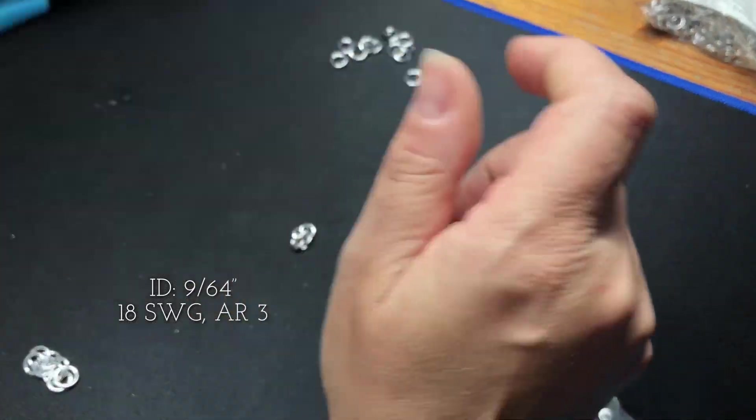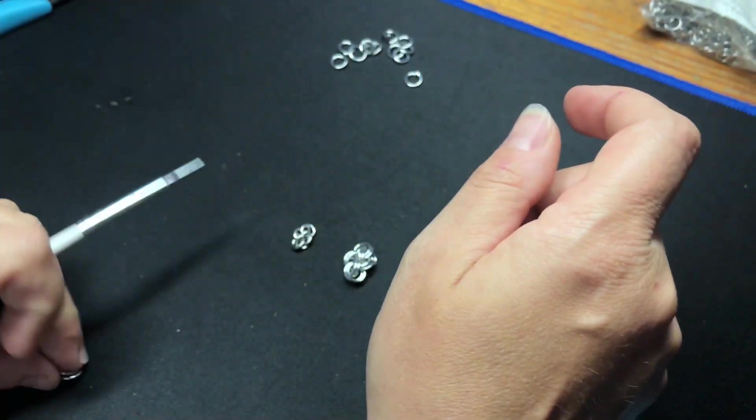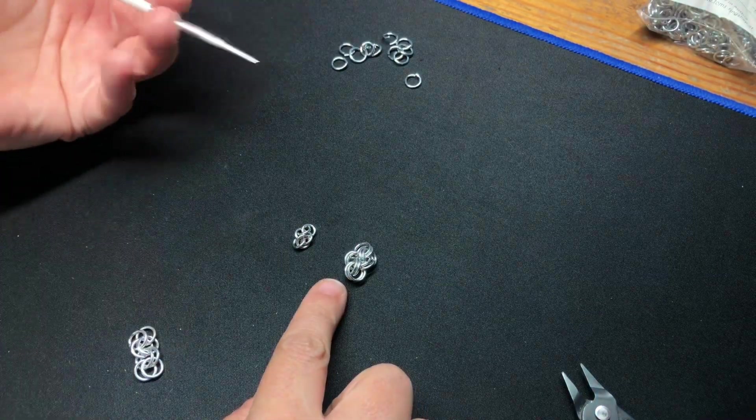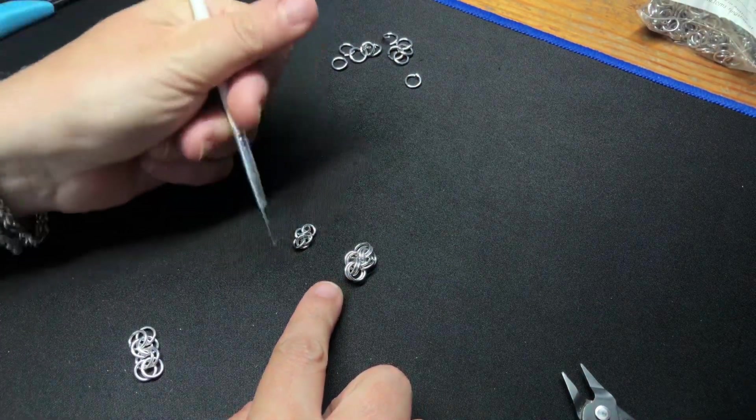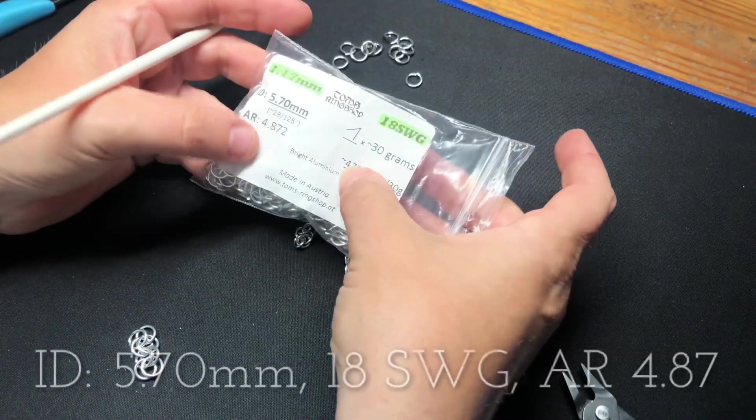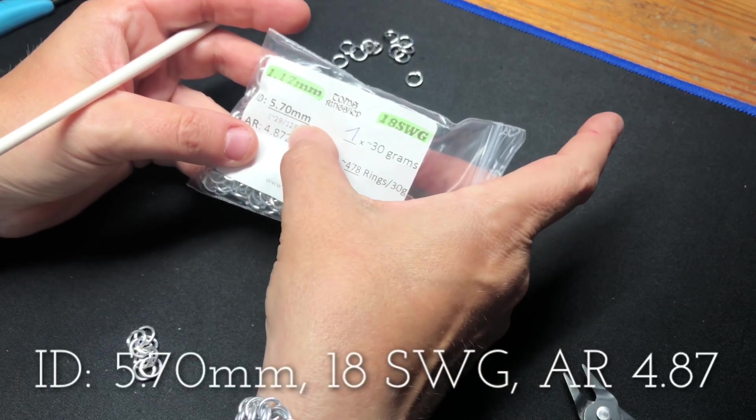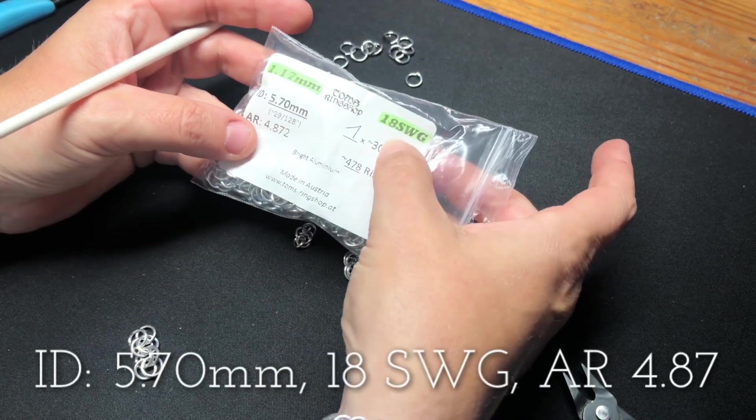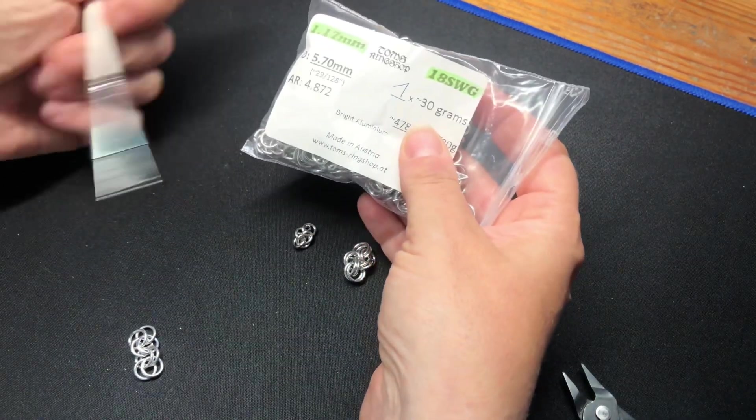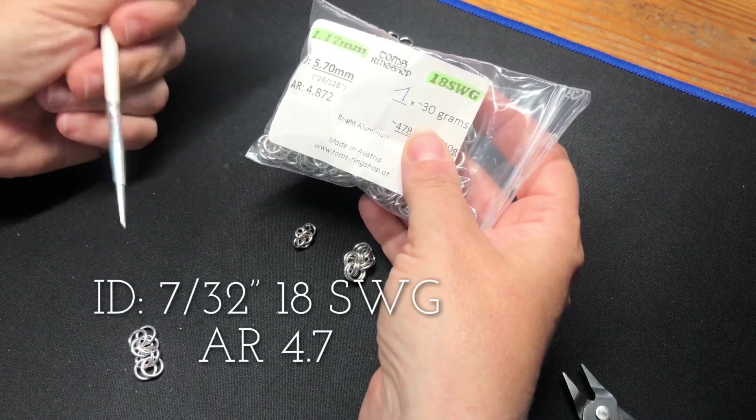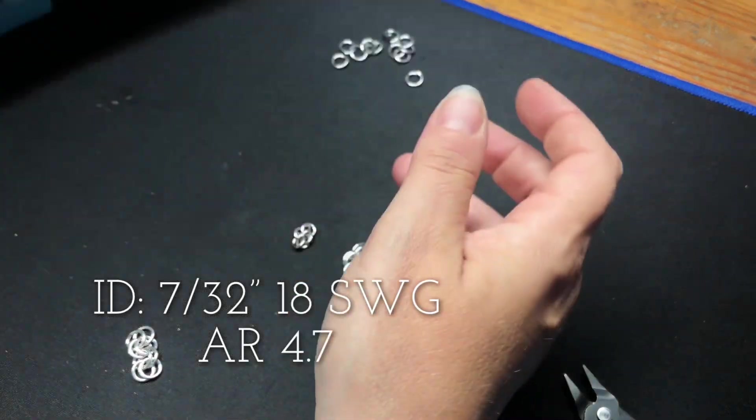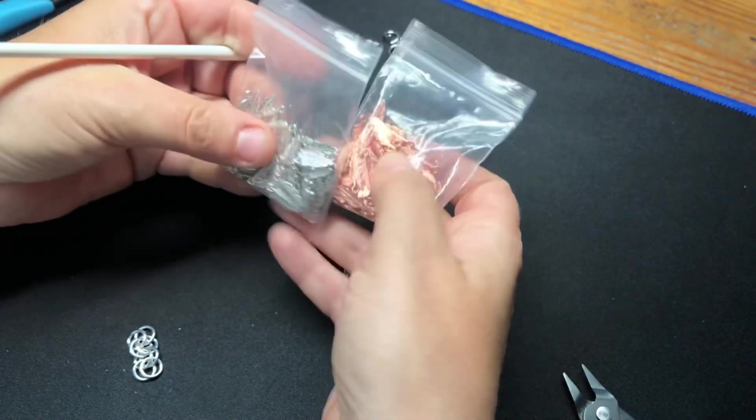Right, so to do the kinged one, then we go up in AR, and because obviously we're doubling the rings up, so we need a bigger space to push those rings through. So I'm going to use these for the kinged version, which is 5.7 millimeters, 18 SWG. They've got an AR of 4.8, and I'll put on the screen here what you're going to need if you're working in imperial in inches.